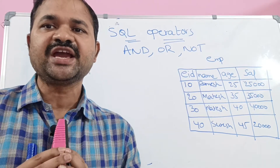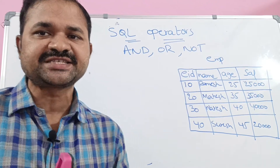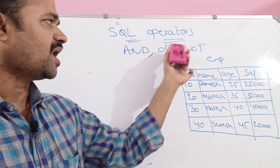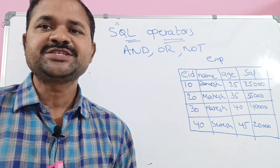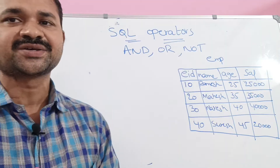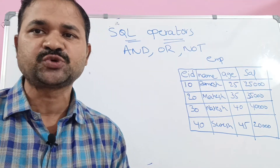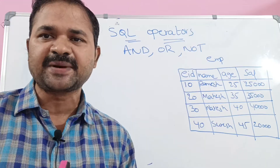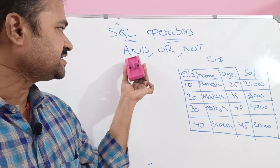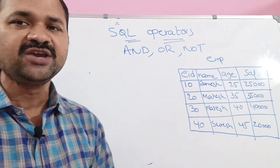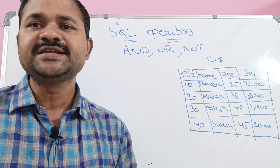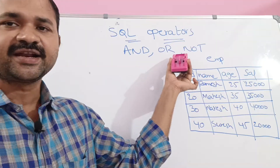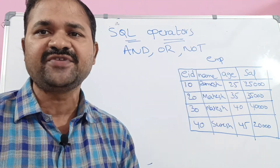In this video, we are going to discuss about SQL operators: AND, OR, and NOT. These operators are called logical operators. In C, we have logical AND represented by two ampersand symbols, whereas in SQL we use the keyword AND. In C, logical OR means the pipe symbol, whereas in SQL we use the OR keyword.